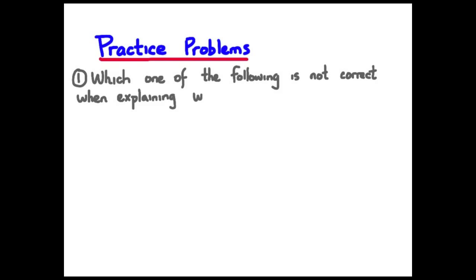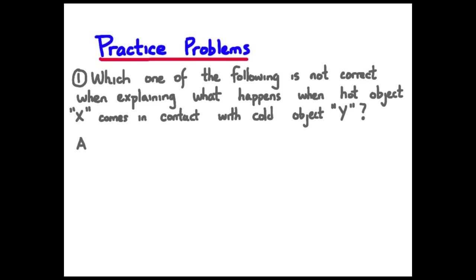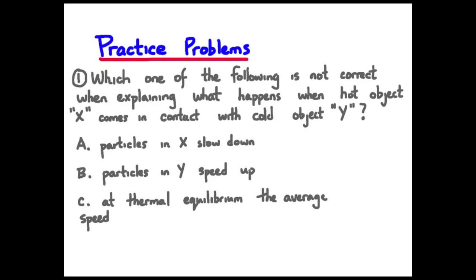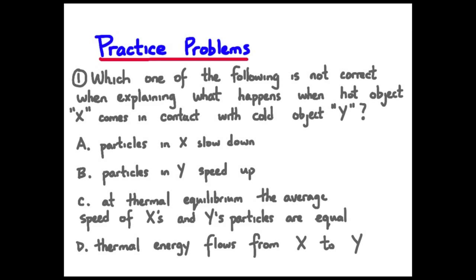Question goes like this. Which one of the following is not correct when explaining what happens when a hot object, X, comes into contact with colder object, Y? And we have four choices. Let's try this question. Pause your viewer now.